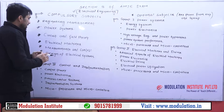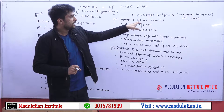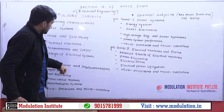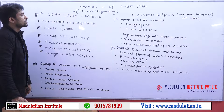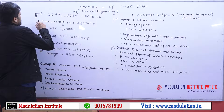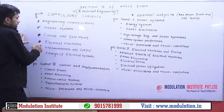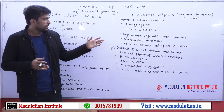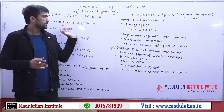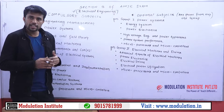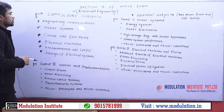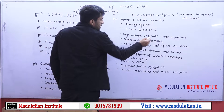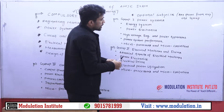In optional subjects, Group 1 has the heading 'power system,' Group 2 has the heading 'electrical machines and drives,' and Group 3 has the title 'control and instrumentation.' Suppose you have already read all six compulsory subjects — engineering management, power system, circuit and field theory, electrical machines, measurement and control — and now you have to decide which optional group will be easiest for you so that within less time you can score more.